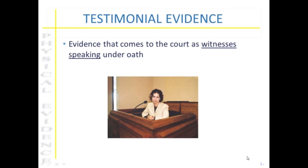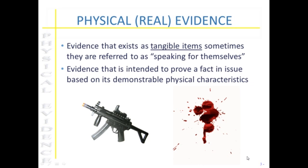There is also testimonial evidence, which is evidence that comes into court as witnesses speak under oath. And then finally, physical evidence — this is going to be evidence that exists as a tangible item, and this is what the forensic scientist is usually concerned with. This type of evidence is used to prove a fact based on the physical characteristics of that evidence itself.